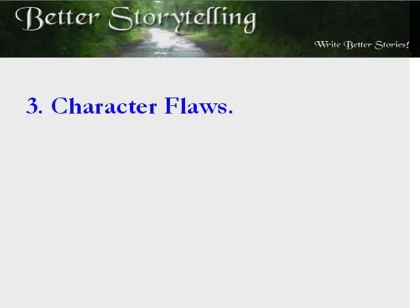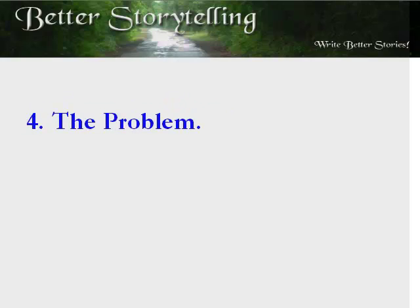4. The problem: when the story begins, the main conflict hasn't occurred since the story-worthy problem hasn't been introduced yet. To overcome this, you need bridging conflict. This comes from a problem a hero is dealing with, which arises out of the character's backstory. Be extremely careful when dealing with the character's history, revealing only a tiny bit — enough to explain what's going on.